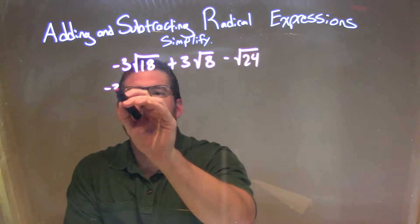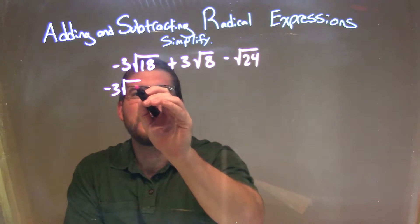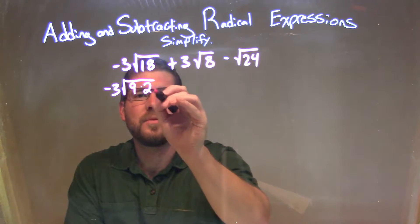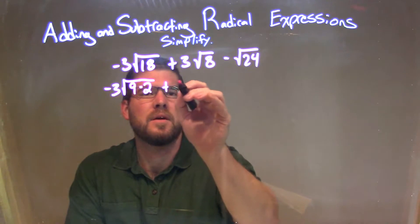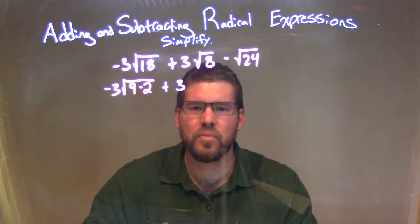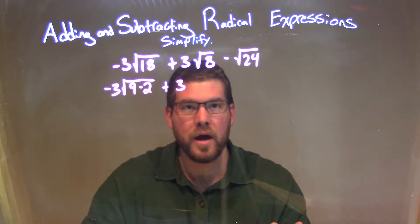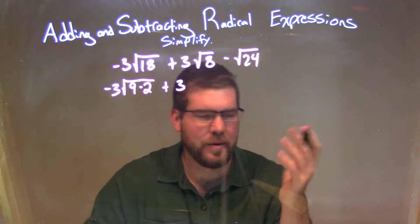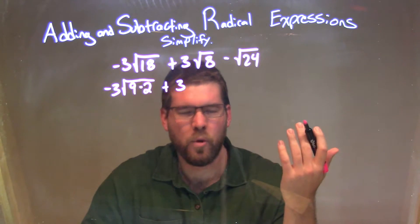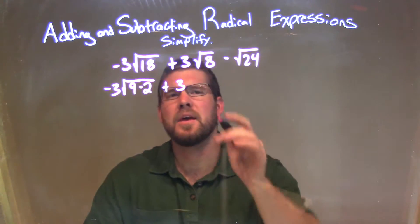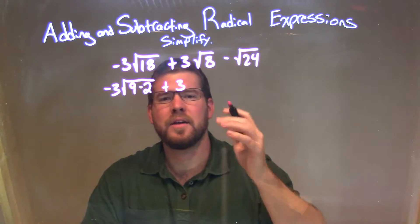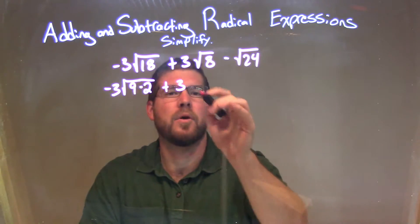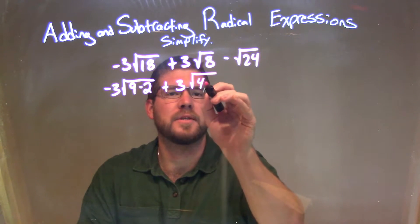So I'm going to simplify this to the square root of 9 times 2. For the 8, I know I can break that down to be 4 times 2. The reason I'm using 4 times 2 is that the square root of 4 becomes 2 — I'm trying to find numbers I can take the square root of when I break it apart. So I have the square root of 4 times 2.